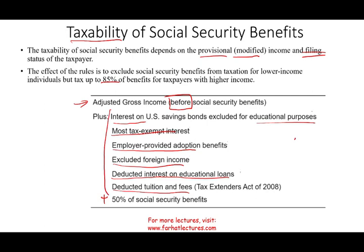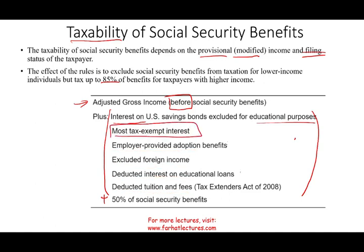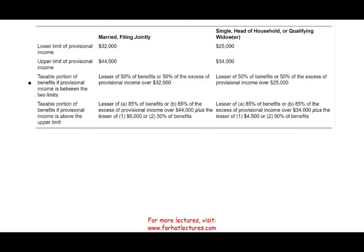Why are they adding all of this? Because the risk is somebody is getting social security and will invest all their money in tax-exempt interest, meaning neither the exempt interest nor their social security would be taxable. So what they're saying is it's not fair — if you have anything that's tax-exempt, you have to add it back. On the CPA exam they'll typically give you tax-exempt interest to add. You have to add certain items to arrive at something called provisional or modified adjusted gross income.